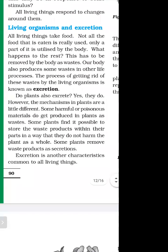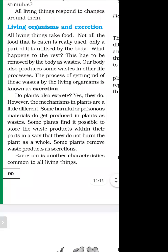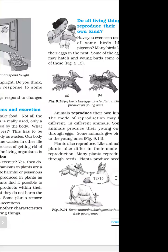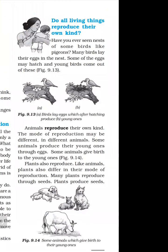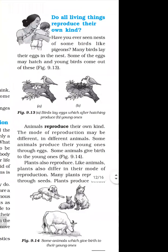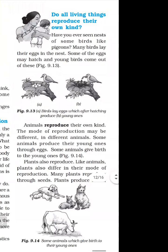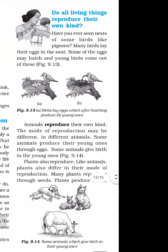Do all living things reproduce their own kind? Yes — the organism produces the same kind: birds are produced by birds, cats are produced by cats. The reproduction produces the same kind. Have you ever seen a nest of some birds? Many birds lay their eggs in the nest.